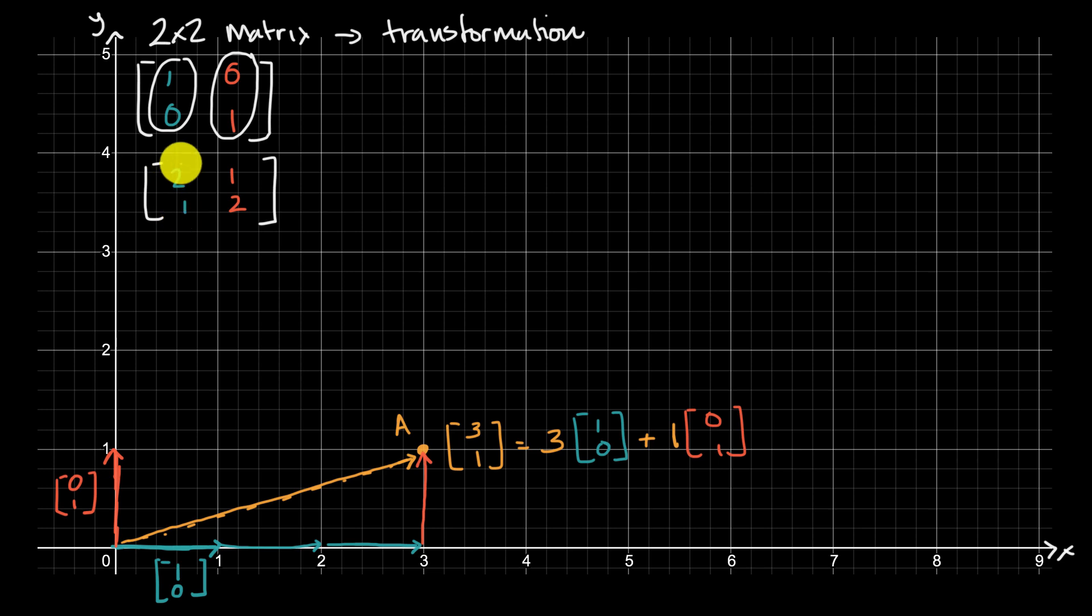Okay, so what does a [2, 1] vector look like? Let me do it in that color. Well, we go two in the x direction, one in the y direction. So it's going to look like this. It's going to look like that. And then what does a [1, 2] vector look like? Well, it goes one in the x direction and then two in the y direction. So it looks like this.